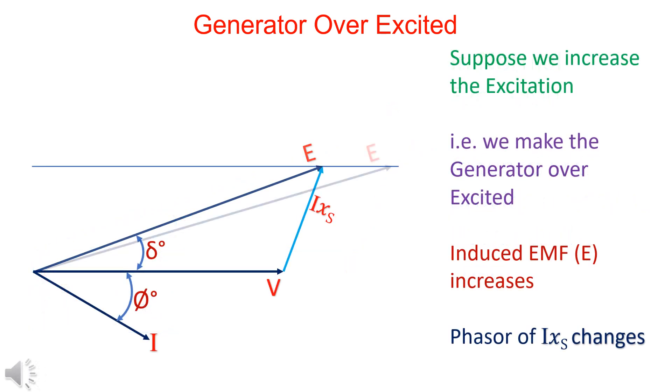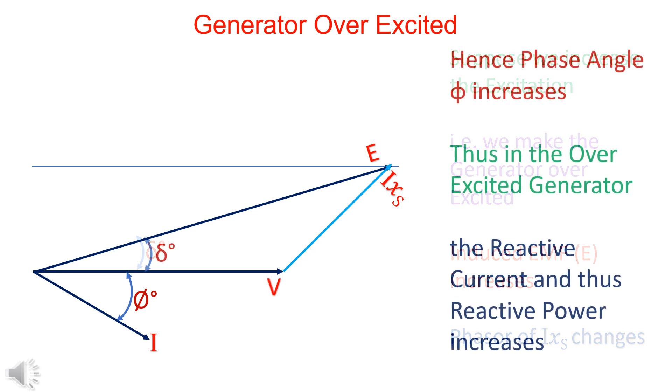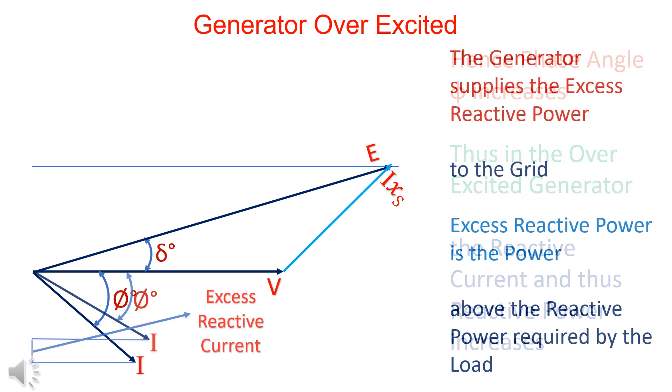When the generator is overexcited, induced EMF E increases and IXs lags. Since the current I lags IXs by 90 degrees, reactive current increases, thus increasing the reactive power. The excess reactive power is also supplied to the grid.